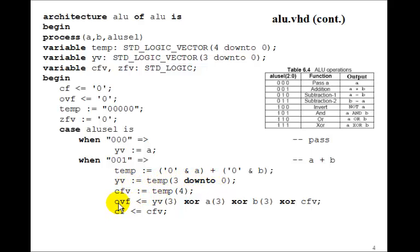You remember how we calculated the overflow flag in the addition example. We take Y variable 3, exclusive or with A3, exclusive or with B3, exclusive or with the carry flag. You can go back and look at how we did that. It's exactly the same. And the carry flag is the carry flag variable. So this is the case of ALU Select equal to 1.